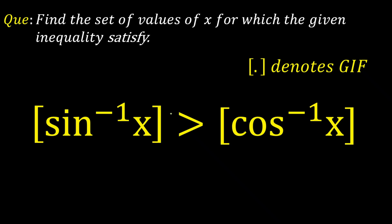Hello everyone. Today we are going to look at a quick question from inverse trigonometric functions, that is ITF. The question is: find the set of values of x for which the given inequality is satisfied. The inequality involves the greatest integer function — GIF of sin inverse of x is greater than GIF of cos inverse of x.